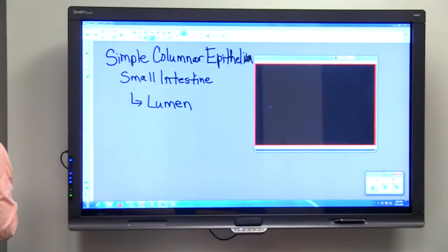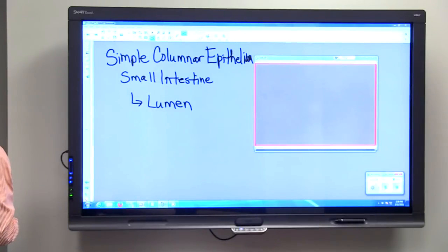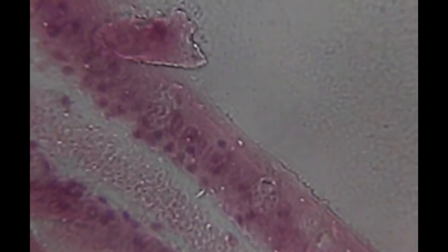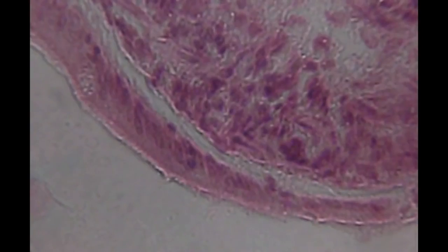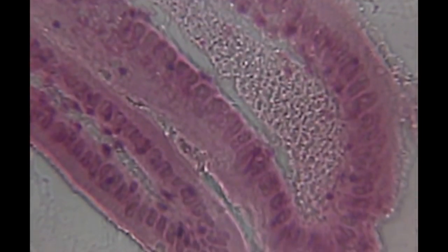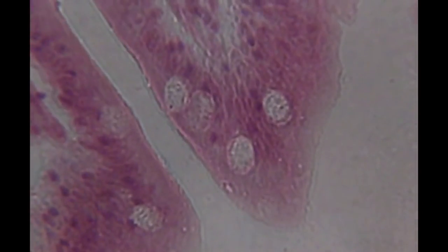What we want to do is go up to higher power and look at this tissue in more detail. I'm going to adjust the microscope so we can see the tissue that we're interested in. I'm looking to find a section that shows a couple of different things. Here we go.